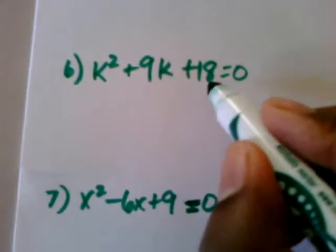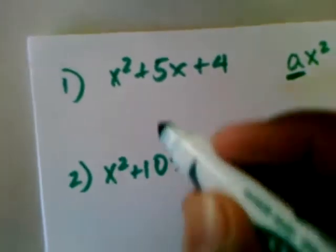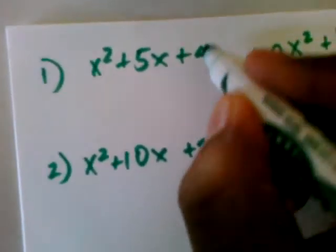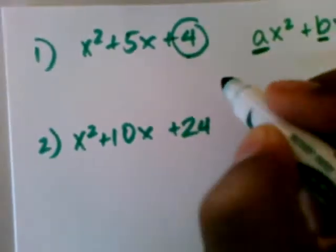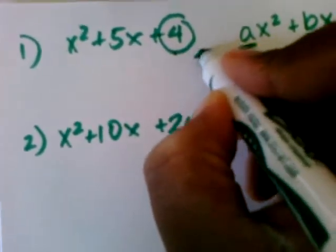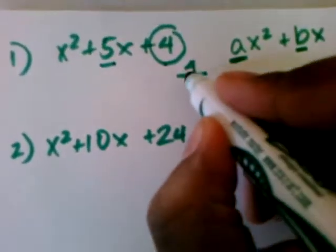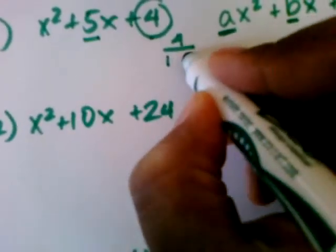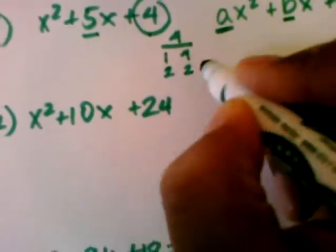And you know you need to solve them when they're equal to something, and so this one is set equal to 0, and this one is set equal to 0. So let's focus on number 1 first. And so what I'm going to do is find the factors of that last term, C, that also have a sum of the second term, 5. And so 1 times 4 equals 4,